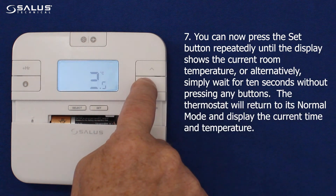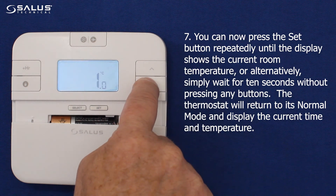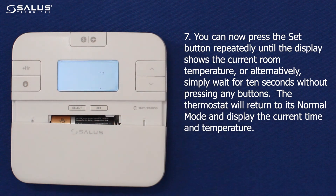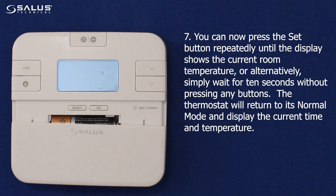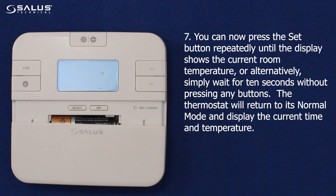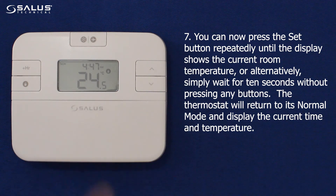7. You can now press the set button repeatedly until the display shows the current room temperature, or alternatively, simply wait for 10 seconds without pressing any buttons. The thermostat will return to its normal mode and display the current time and temperature.